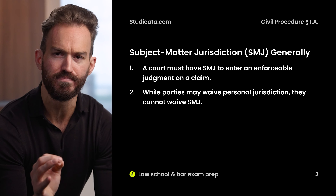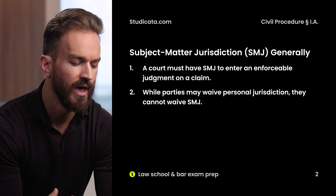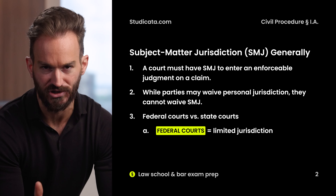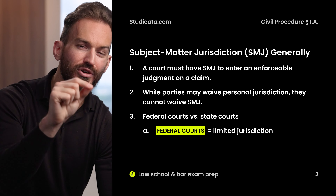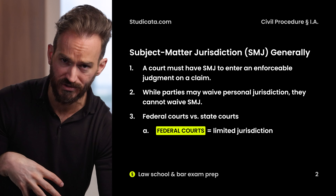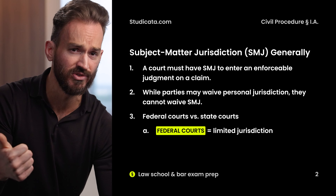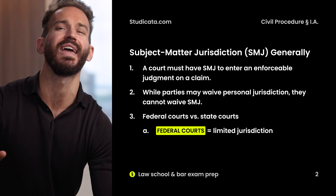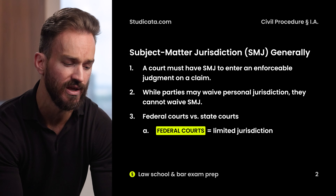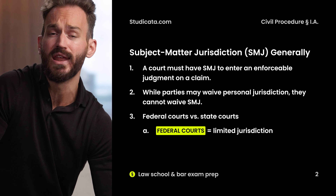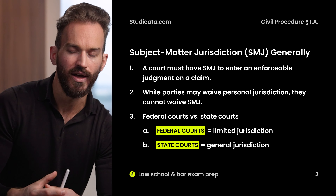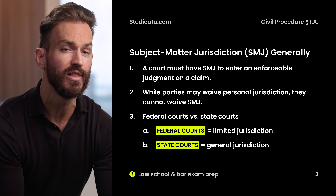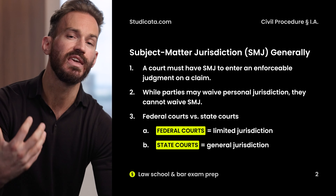Our last big picture point when thinking about subject matter jurisdiction generally is federal courts versus state courts. Federal courts are courts of limited jurisdiction — they can only hear particular types of cases and can't just hear anything that comes through their doors. The main two types of cases federal courts can hear are diversity cases and federal question cases. For this reason, we say federal courts have limited jurisdiction; they're limited in the types of things they can hear.